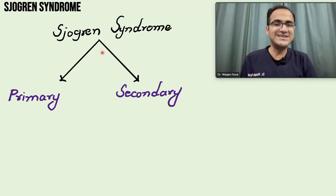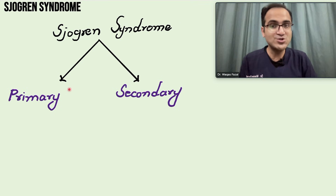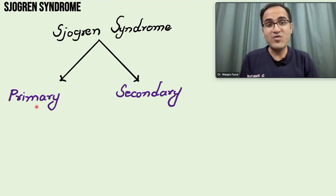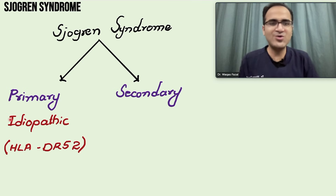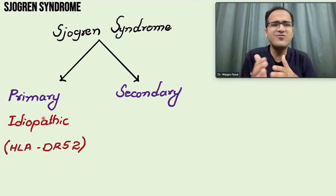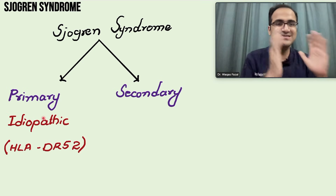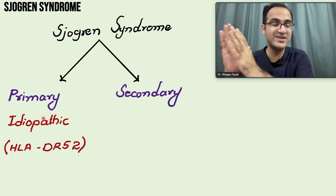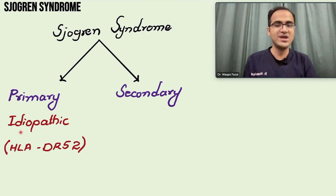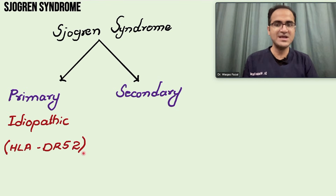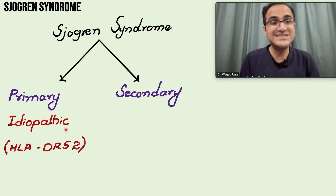Sjögren's syndrome is divided into primary and secondary Sjögren's. Primary Sjögren's is the one in which you do not know the cause — the immune system is destroying the salivary glands and lacrimal glands and it is associated with HLA-DR5-2. The cause is idiopathic.